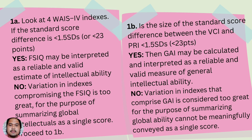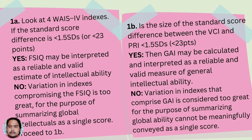Step 1b: If the size of the standard score difference between the VCI and the PRI is less than 1.5 standard deviations or less than 23 points, then GAI may be calculated and interpreted as a reliable and valid measure of general intellectual ability. If not, the variation in indexes comprising GAI is too great and global ability cannot be meaningfully conveyed as a single score.